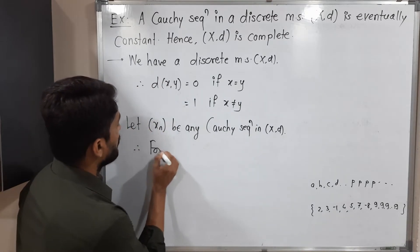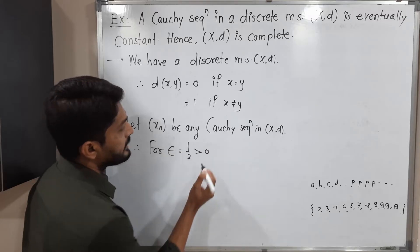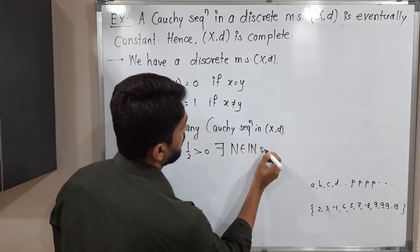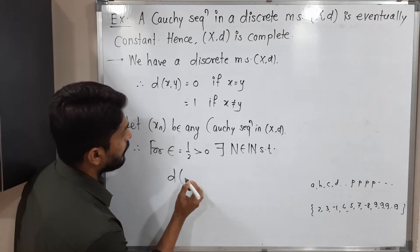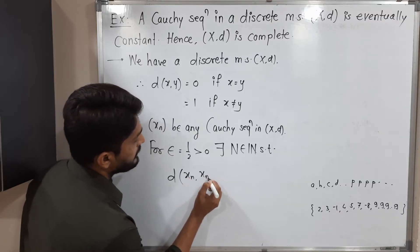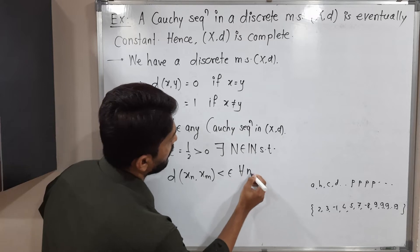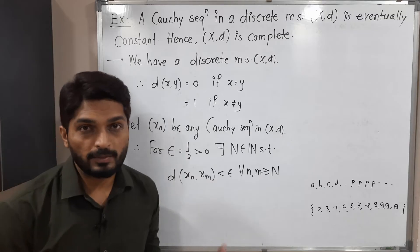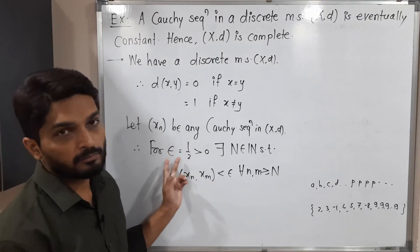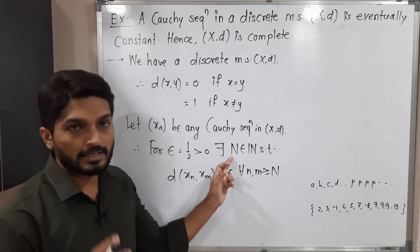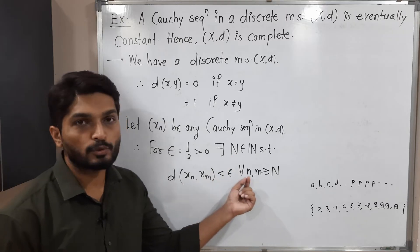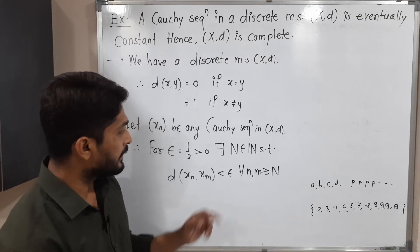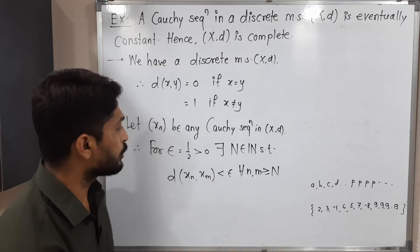For epsilon = 1/2, which is positive, there exists N belonging to the set of natural numbers such that d(x_n, x_m) < epsilon for all n, m greater than or equal to capital N. By definition of Cauchy sequence, for given positive epsilon there exists a fixed natural number N such that d(x_n, x_m) < epsilon for all n, m ≥ N. Since epsilon is 1/2, we replace epsilon: d(x_n, x_m) < 1/2 for all n, m ≥ N.